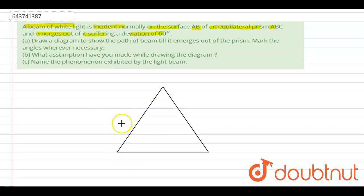This is equilateral triangle. Here is A, B, and C. And a beam of white light is incident normally, so draw the incident line between falling normally, it is 90 degree.